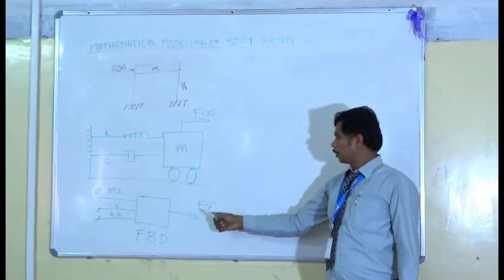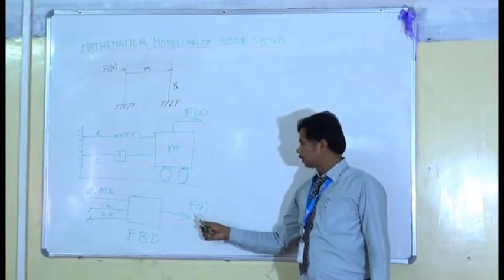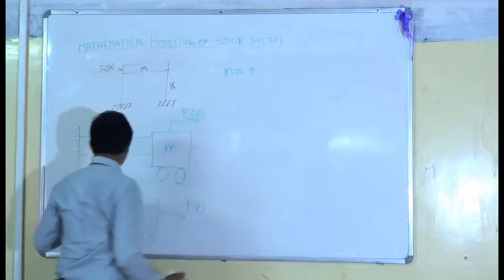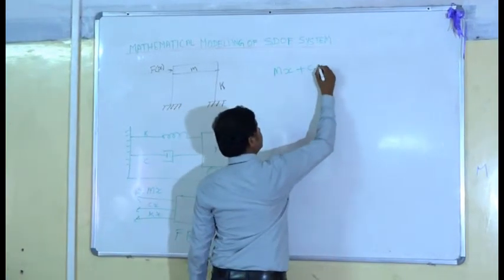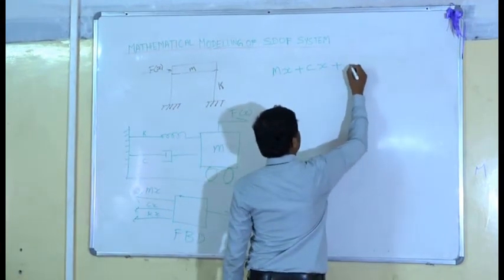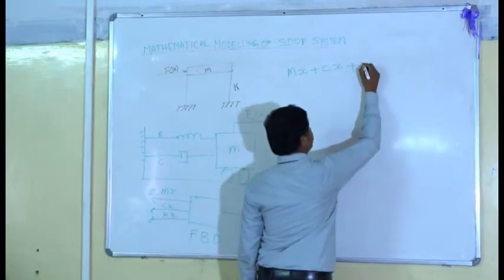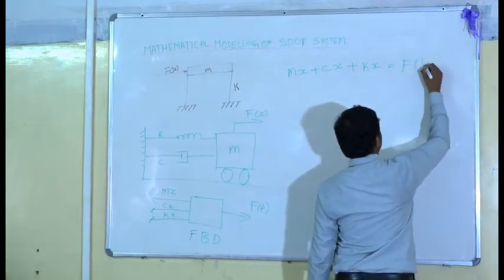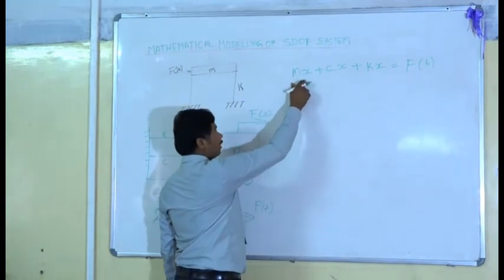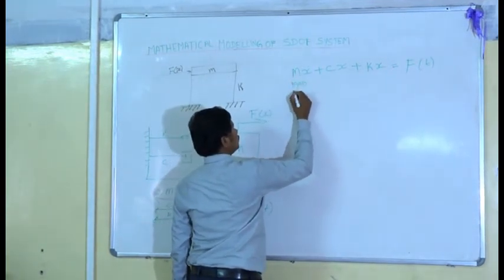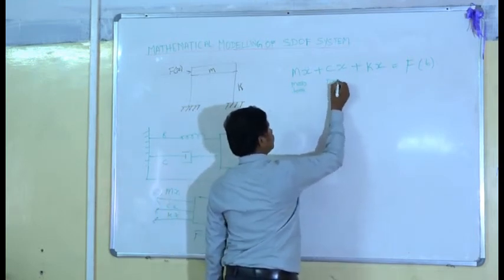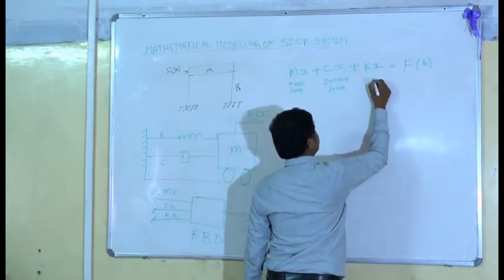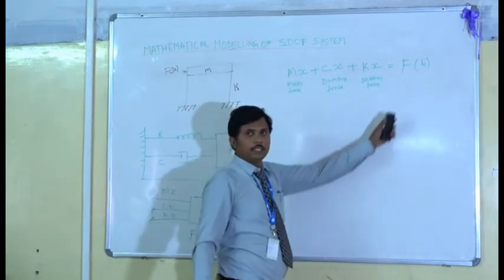By considering the equilibrium of forces, this force is equal to these forces. So, mx double dot plus cx dot plus kx equal to external force. This is the mass force. This is the damping force. This is the stiffness. This is the external force.